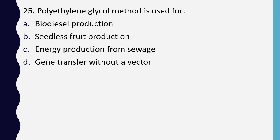Question 25. Polyethylene glycol method is used for: biodiesel production, seedless fruit production, energy production from sewage, or gene transfer without a vector. The correct answer is option D: it is used for gene transfer without a vector.